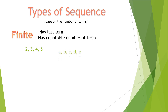Another example of a finite sequence: A, B, C, D, E. This also has a last term, which is E, and a countable number of terms — we have 5 terms. So this is also an example of a finite sequence.